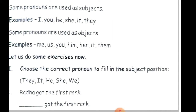Example: 'Radha got the first rank.' Radha is our noun. In this sentence, Radha is in the starting position, meaning subject position. Radha is a girl, so we will use 'she' from the subject pronouns I, you, he, she, it, they. She is a pronoun used in place of the noun. Since we are using it in the subject position, it is a subjective pronoun.